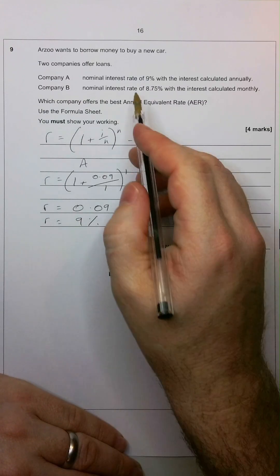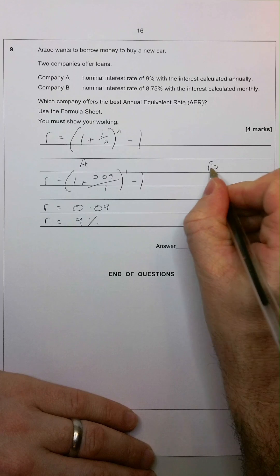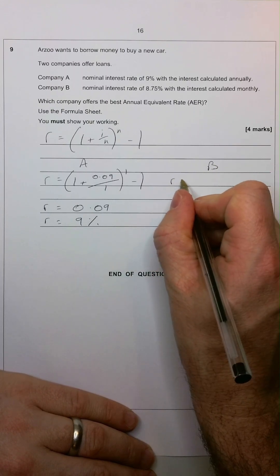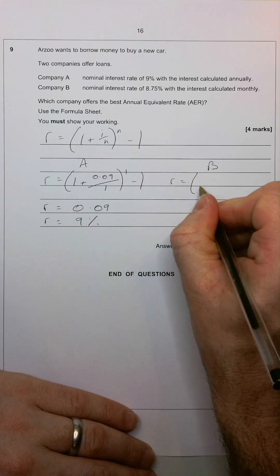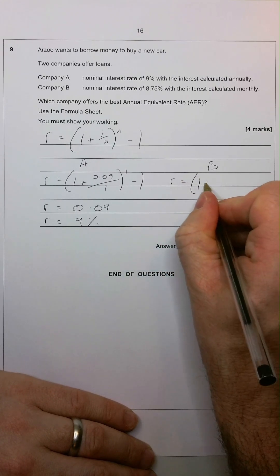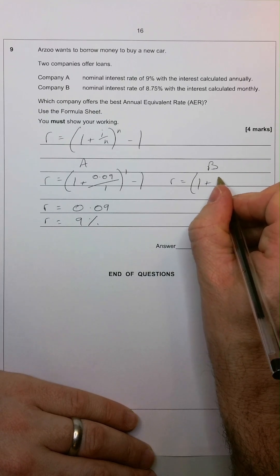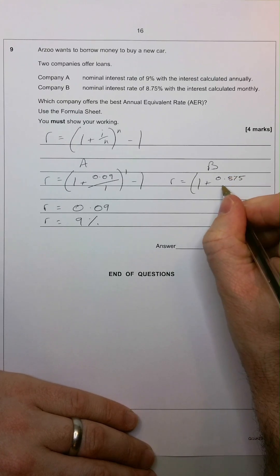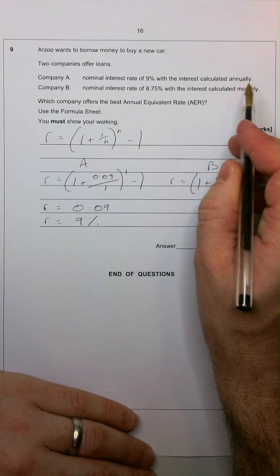The tricky bit comes when we're working out Company B. For Company B, we're going to put our figures into our calculator again. Then, R, or indeed AER, equals 1 plus our interest rate expressed as a decimal, so 0.0875, divided by, in this case, it's not 1 because interest is calculated monthly.